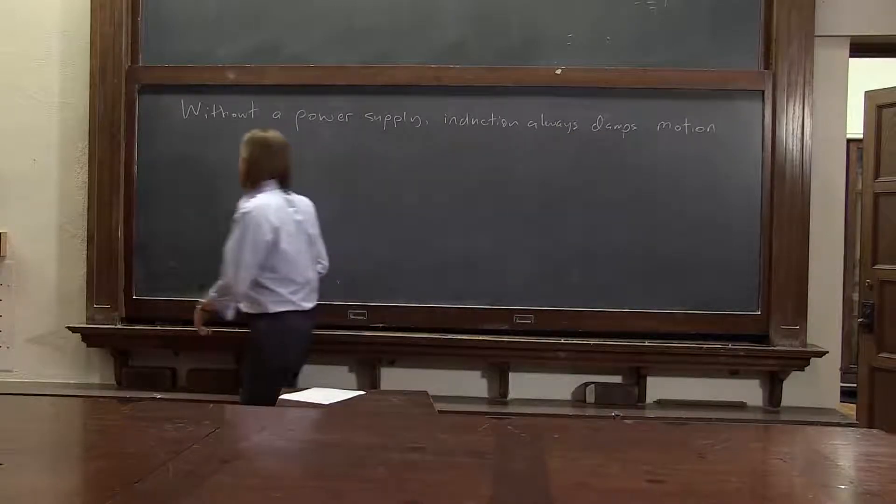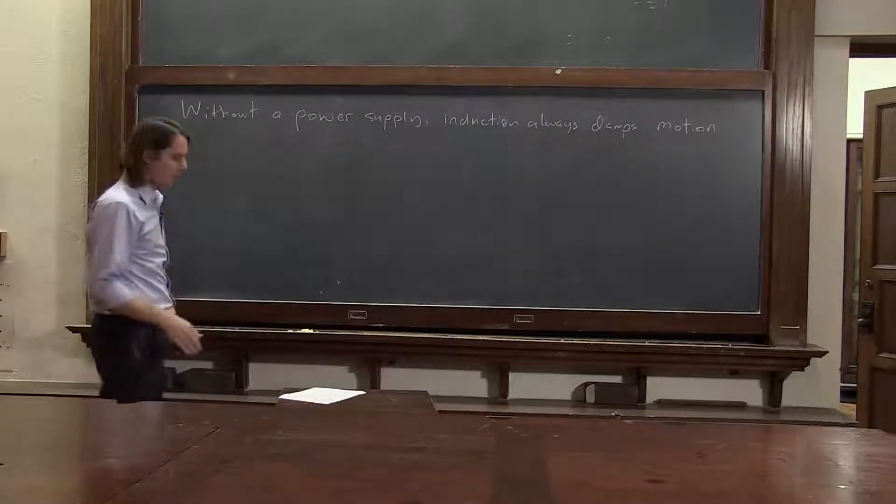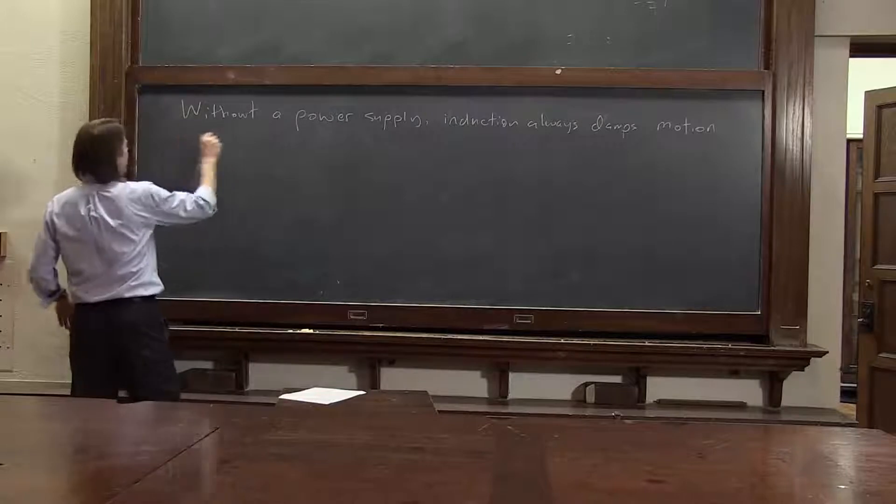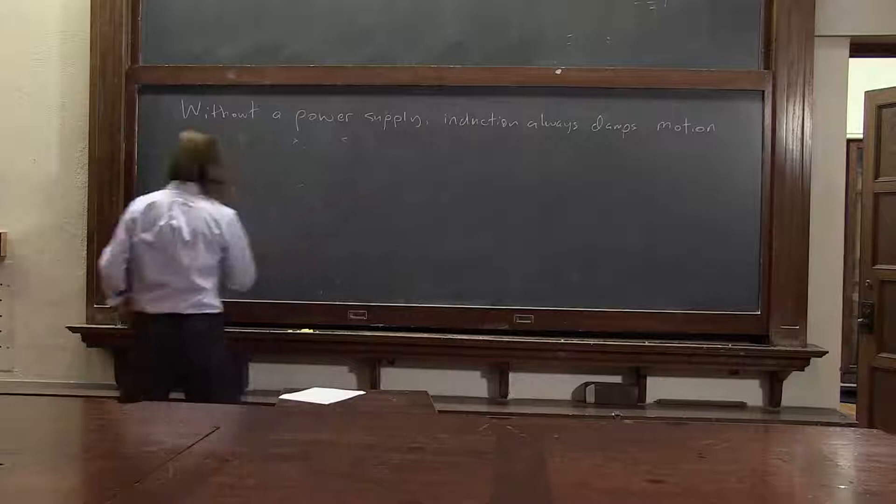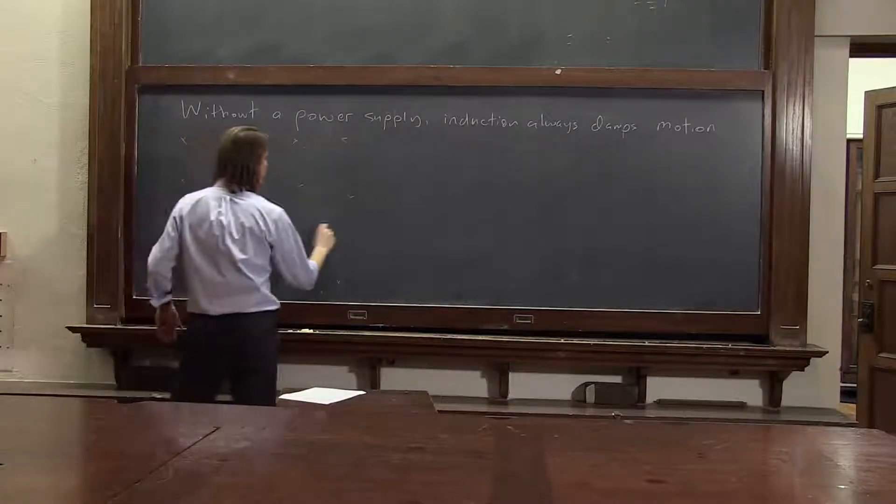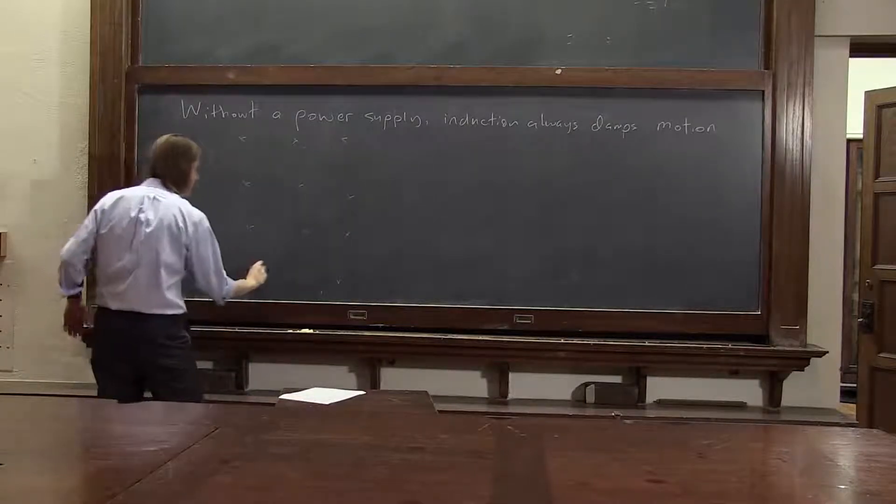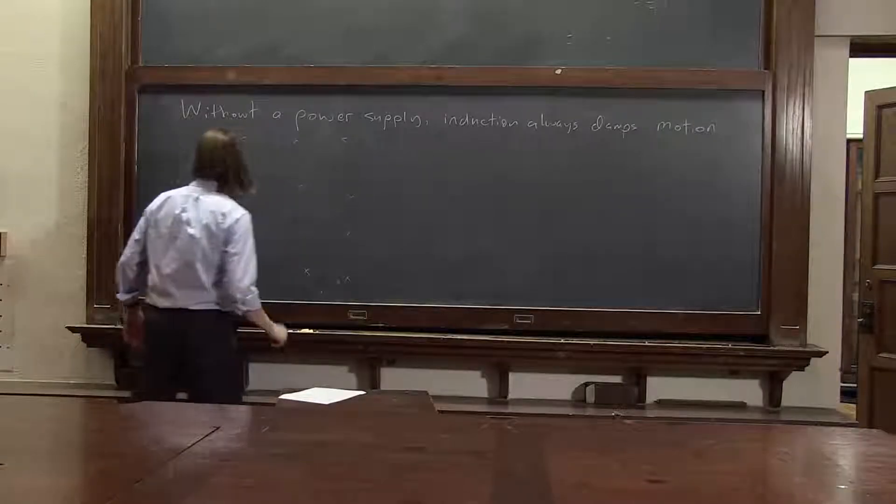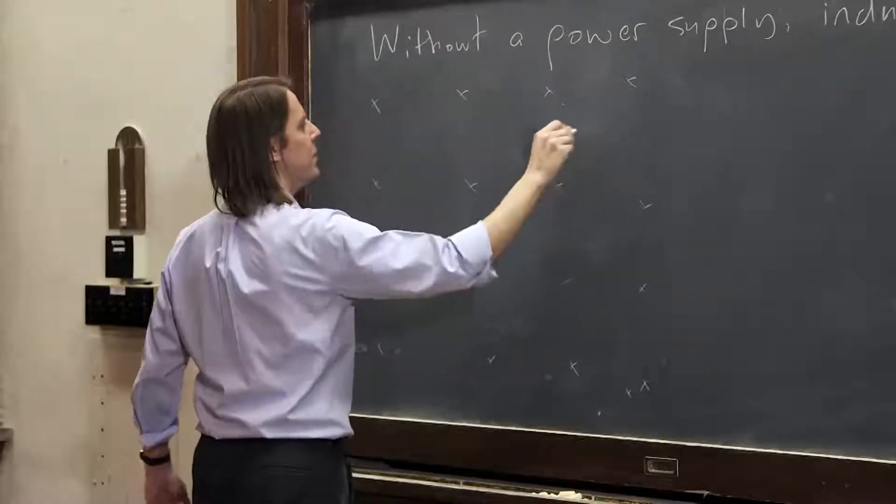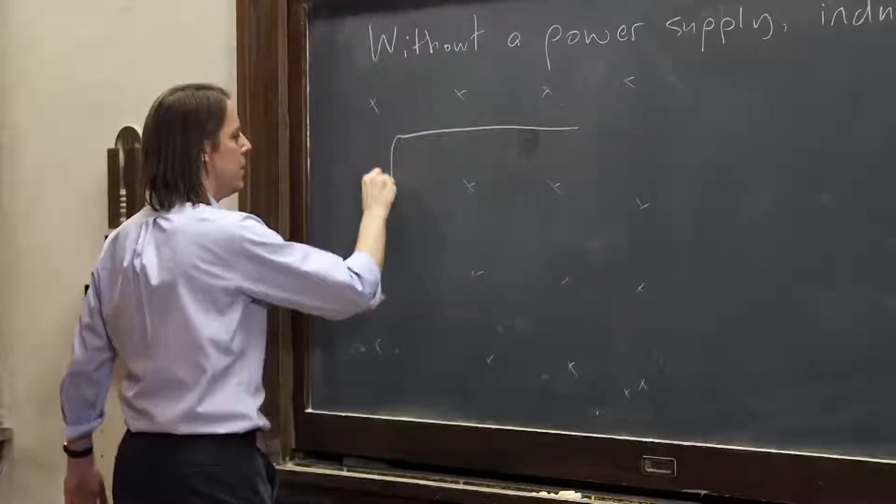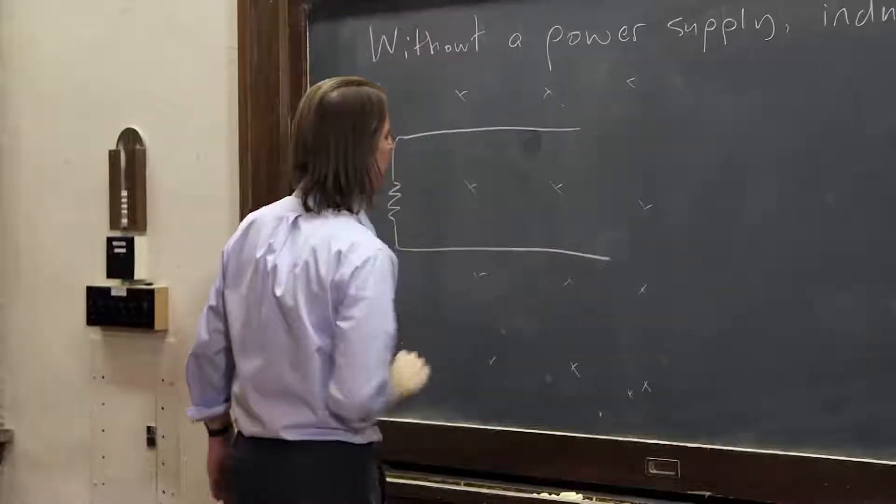So let's think about that moving slider like we had last time. I won't draw it quite as nice, but we have a uniform B field into the board, and we'll just draw it as wires this time, and acknowledge that it has some resistance.